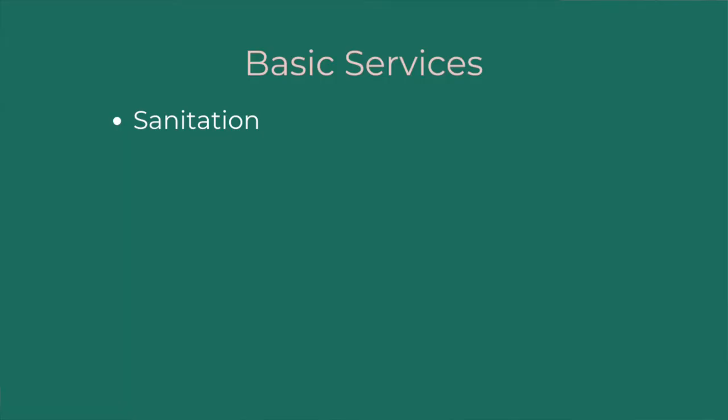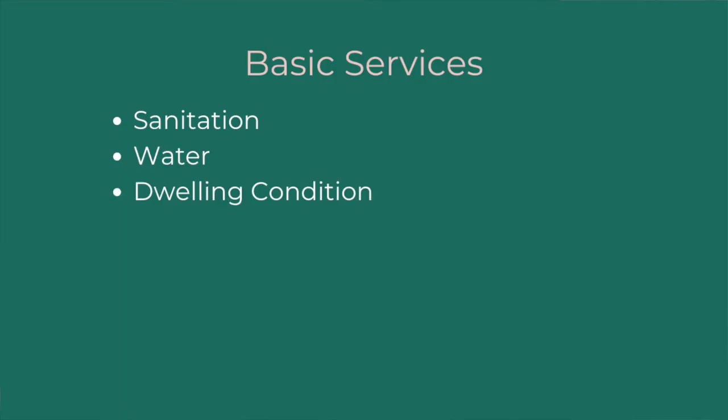Access to basic services includes sanitation, water, the condition of the dwelling, overcrowding, and the level of education of the household. The tenure piece is one I hadn't fully explored before researching this video. The core idea is that it's impossible for people to lift themselves out of poverty if they do not have adequate control or legal title to the resources that give them their income and livelihoods. This part of the target is about ensuring that vulnerable communities — like indigenous people — have access to legal title and access to their land and resources.